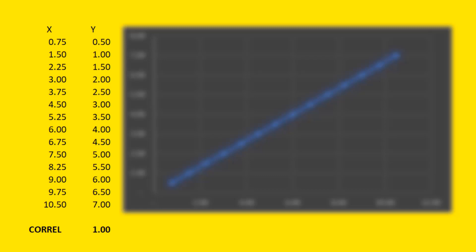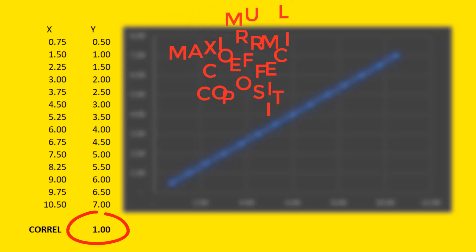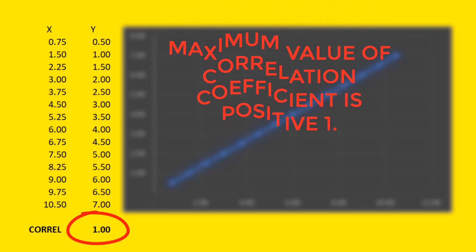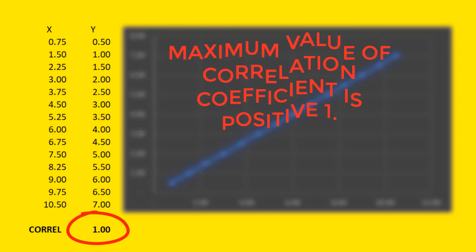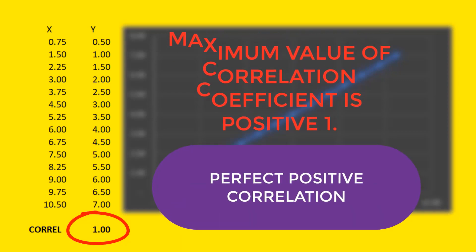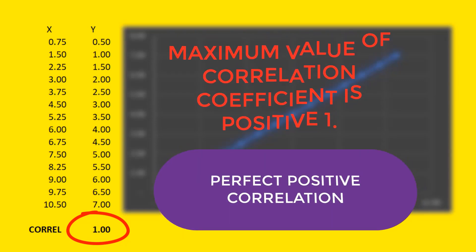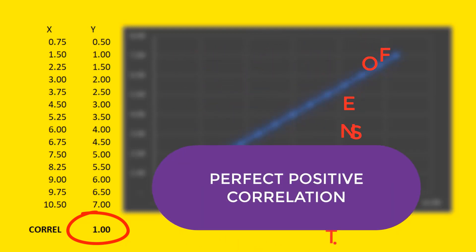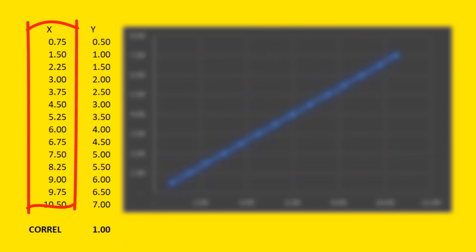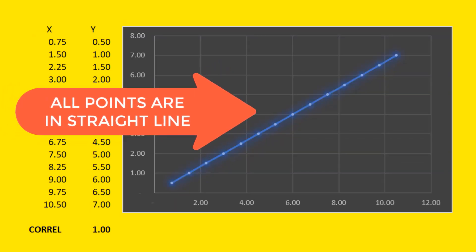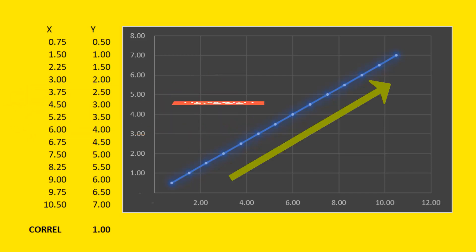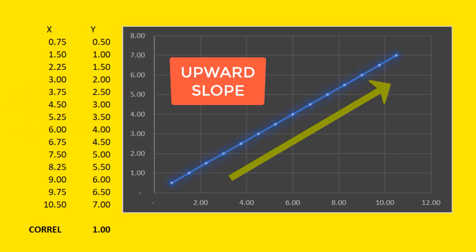The maximum value of the correlation coefficient is positive 1, which indicates a perfect positive correlation. This data shows that for every quarter unit increase of x, y increases by half a unit. When we make a scatterplot, all points are in a straight line in an upward slope.